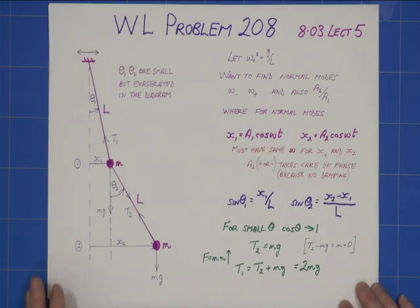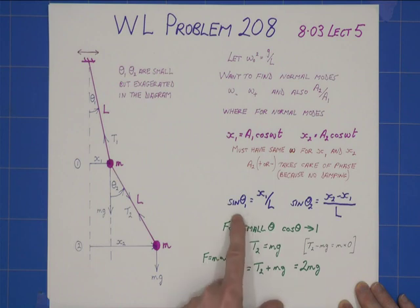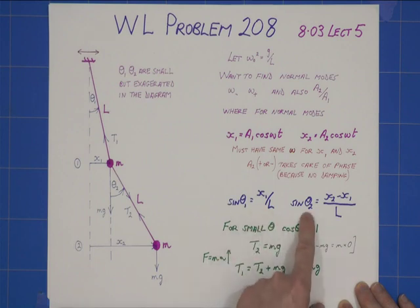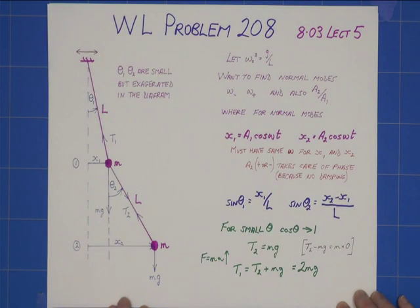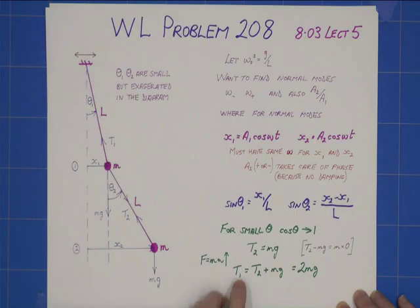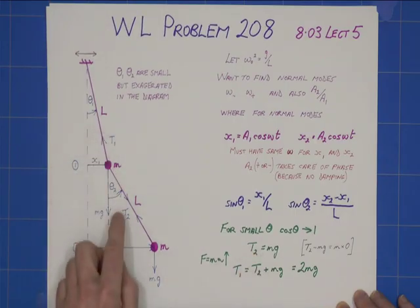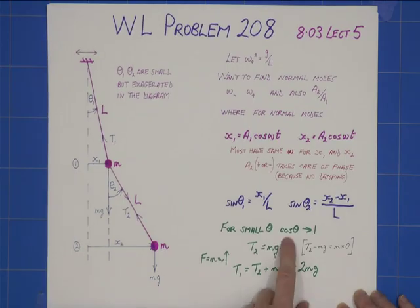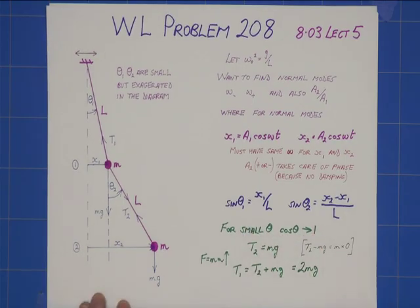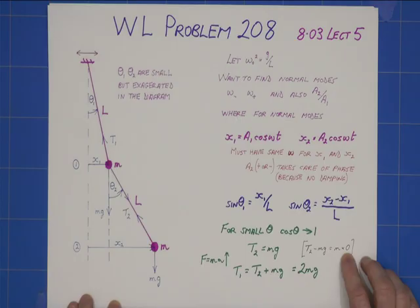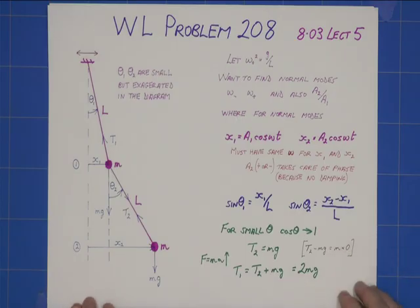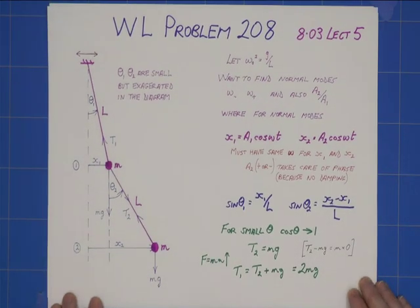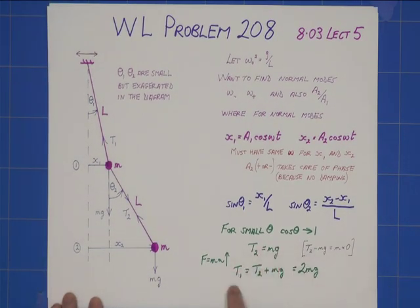Okay, a few little things to take care of, first of all. Sine theta 1 is clearly that. Sine theta 2 is that. I consider F equals ma vertically to determine the tension T1 and T2. Cos theta for small theta goes to 1. So, if I consider F equals ma, say, on here, I would get T2 cos theta minus mg equals mass times 0, ma, because we're not considering any vertical acceleration, so I get T2 equals that, T1 equals that.